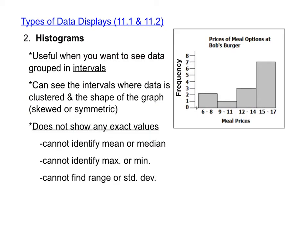The second type of data display that we learned about was a histogram. Remember that histograms are useful when you want to see data grouped in intervals. Here's an example of a histogram that shows the prices of meal options at Bob's Burgers. Notice the intervals for the meal prices — some meals cost between 6 and 8 dollars, and some meals cost between 9 and 11 dollars, and so on. We can see the frequency of each of the intervals. So because 6 through 8 has a frequency of 2, that means there are two meal options that are between 6 and 8 dollars.